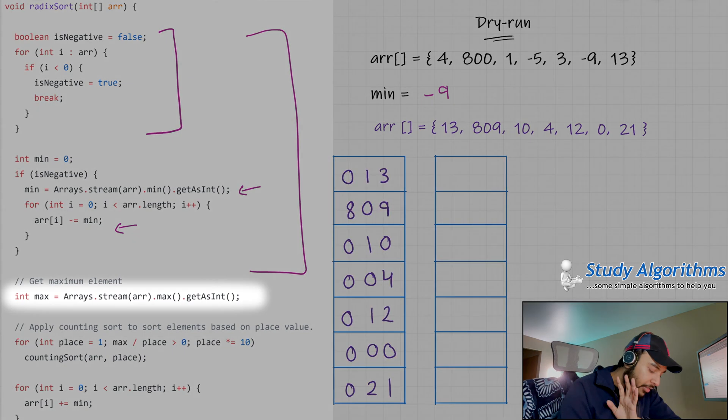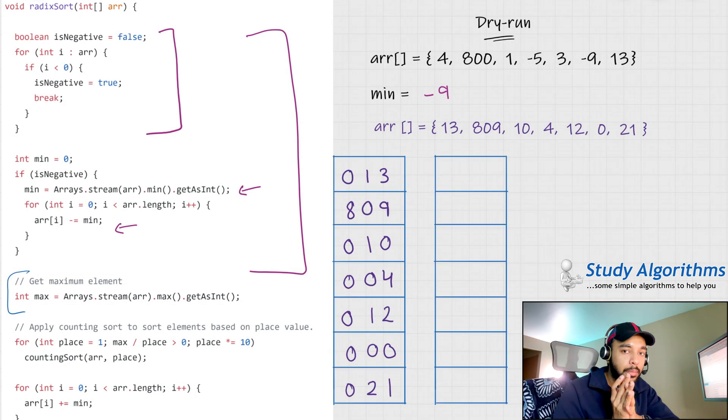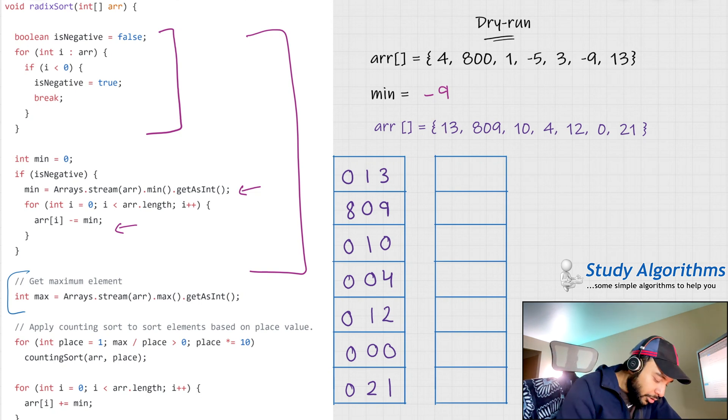In the next step, we find out what is the maximum element that we have because the maximum element will determine the maximum number of digits that we have, right? So if your maximum element has four digits, that means you need to sort all of these numbers four times, right? The units place, tens place, hundreds place, and a thousands place. So you find out the maximum number. In this case, the maximum number comes out to be 809.